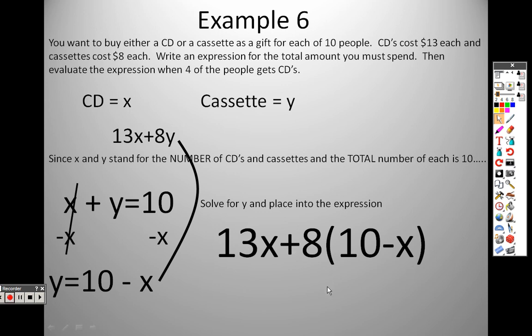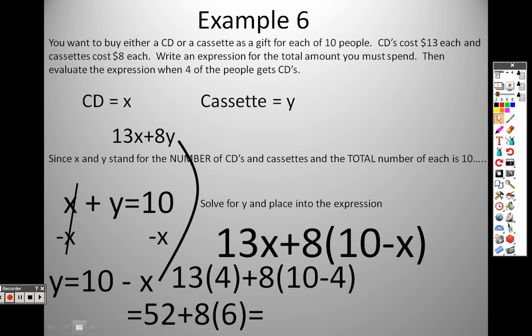So this is the expression to solve, and it says now solve it for four. So when we know that we're buying four CDs, I plug a four in. Well ten minus four is six, and thirteen times four is fifty two, eight times six is forty eight. So fifty two plus forty eight is one hundred. So it would cost one hundred dollars to buy four CDs and six cassettes.